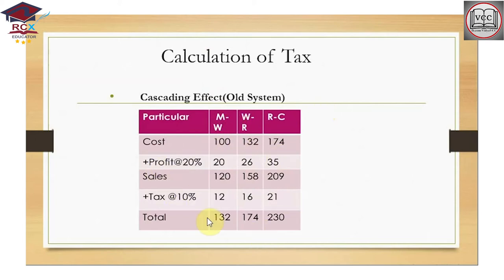In the old system table: cost 100, then 120, then 132, then 174 — adding everything up. Finally, government revenue collected was: 12, then 16, then 21. If all these people claim ITC, the government's net revenue is 21 rupees of tax out of 100.